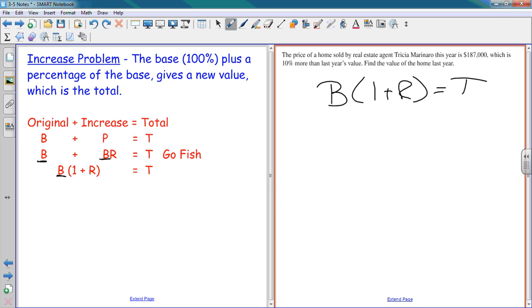Think about it. Is that my original price or my price after the increase? It's the original plus the increase, so it's my total. So I have $187,000 after my increase. What is my increase? 1 plus 10% or 0.1 times the original amount. I don't know my original amount. So how do I solve for B?